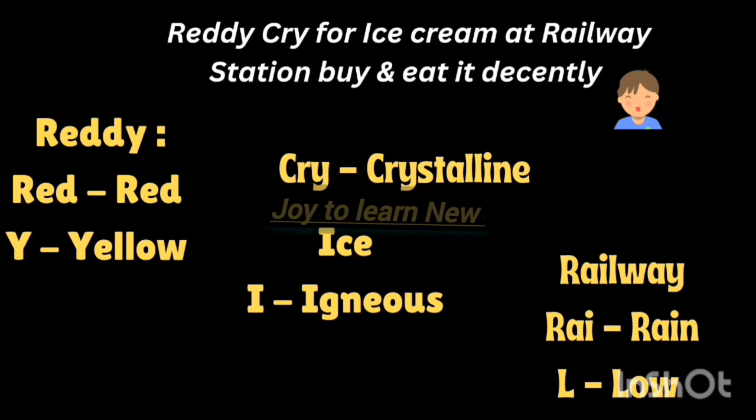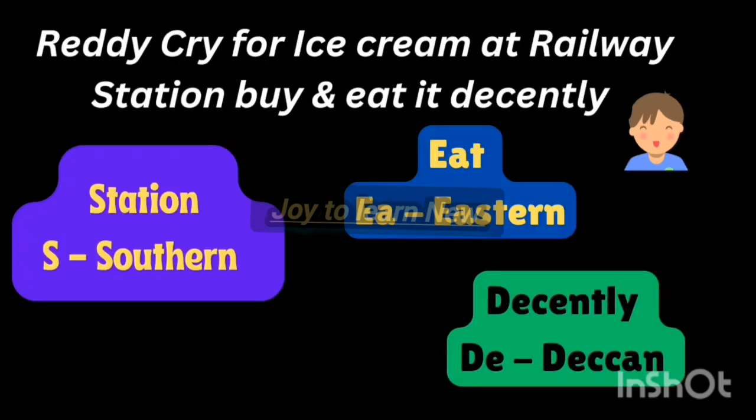Take the word 'railway station.' R-A-I represents rain and L represents low — meaning low rainfall. So red and yellow soil develops in low rainfall areas. Then 'station' — S represents southern. 'Eat it' — E-A represents eastern. 'Decently' — D-E represents Deccan.